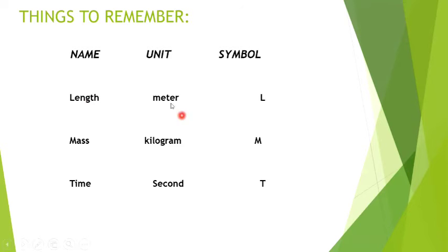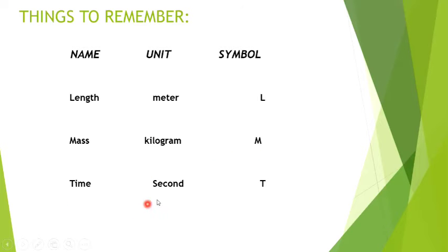Length: the unit is meter and the symbol is capital L. Mass: the unit is kilogram and the symbol is capital M. Time: the unit is second and its symbol is capital T. These three basic things you have to know.